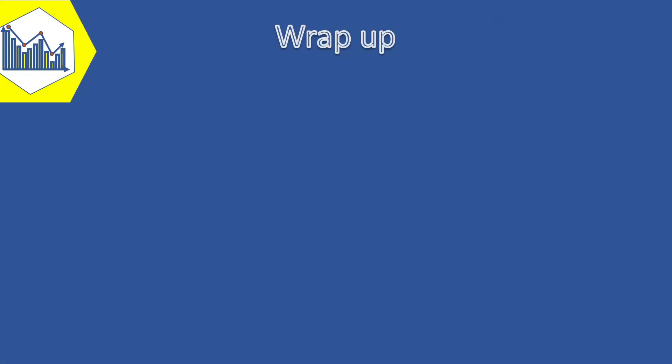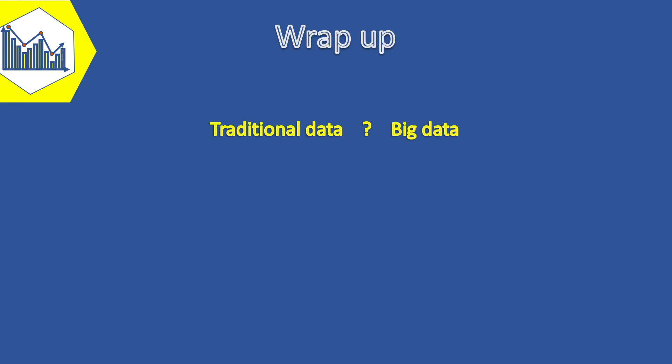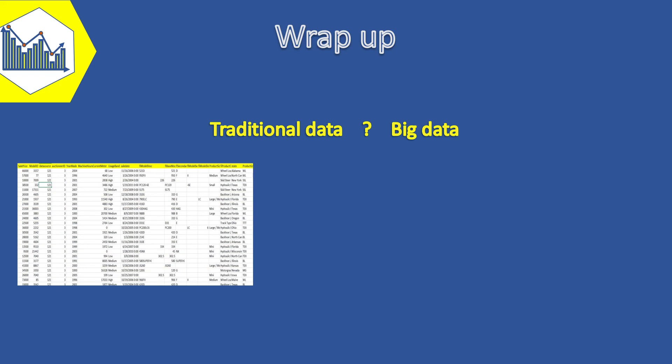To wrap up, let's review what we learned. Data is the first step to understanding business problems, so we must know what type of data we're dealing with. Traditional data is the data we usually see — tables with numeric and text values. Big data is a more advanced type: besides its volume, it contains various formats including unstructured, semi-structured, and structured data.